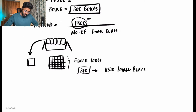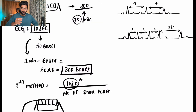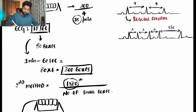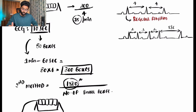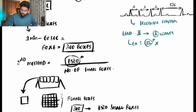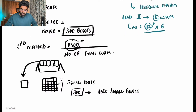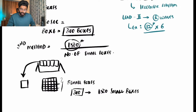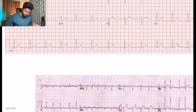These two methods apply only to ECGs with a regular rhythm — where the number of large boxes is the same between R-R intervals throughout the strip. If the boxes between R-R intervals vary — two boxes, three boxes, five or six boxes — we call it an irregular rhythm. In that case, count the total number of R waves and multiply by six, because the strip represents 10 seconds and we need to scale to 60 seconds.